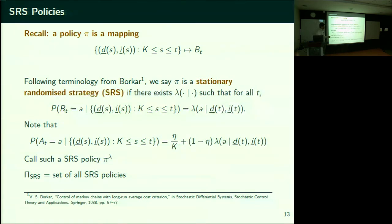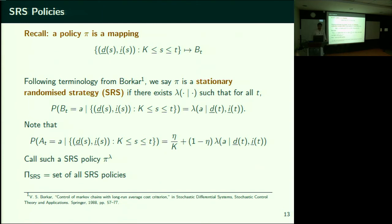The nice property of the trembling hand: for any SRS policy, the controlled Markov process actually becomes a Markov process — because BT depends only on the current state. Further, if the trembling hand parameter η is strictly positive, you can show that this Markov process is ergodic — irreducible, aperiodic, and positive recurrent. The ergodicity crucially uses the fact that η is strictly positive. Is it necessarily non-ergodic when η=0? Ergodic has many aspects — you must be able to go from any state to any other with strictly positive probability.